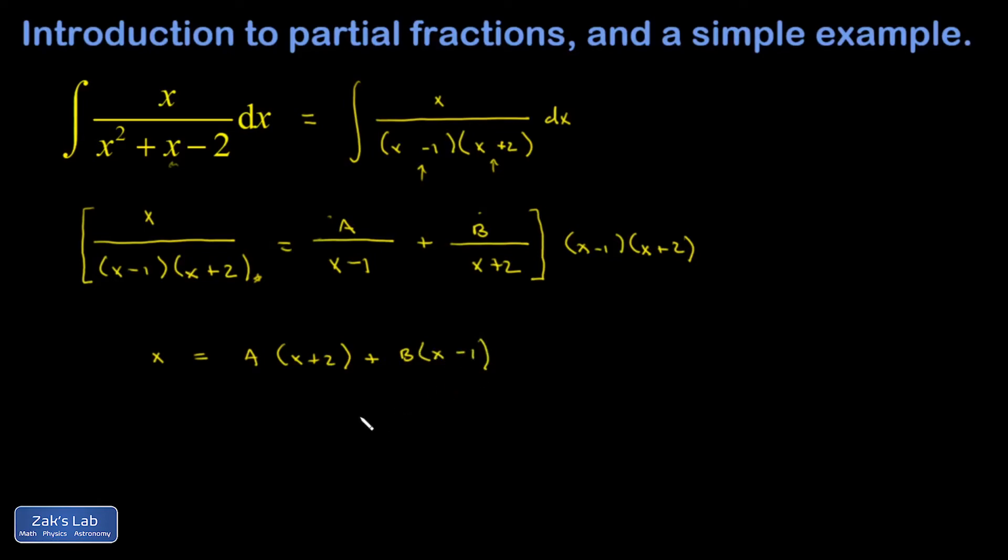Now there's a couple techniques for solving for A and B. The one I'm going to choose here is to go ahead and expand both of these terms and then collect together all the like terms. So I have x equals - okay, so I have an Ax and a Bx, so that gives me (A plus B) times x. Those are my linear terms. And then I have my constant terms: there's a 2A and a negative B, so I have 2A minus B.